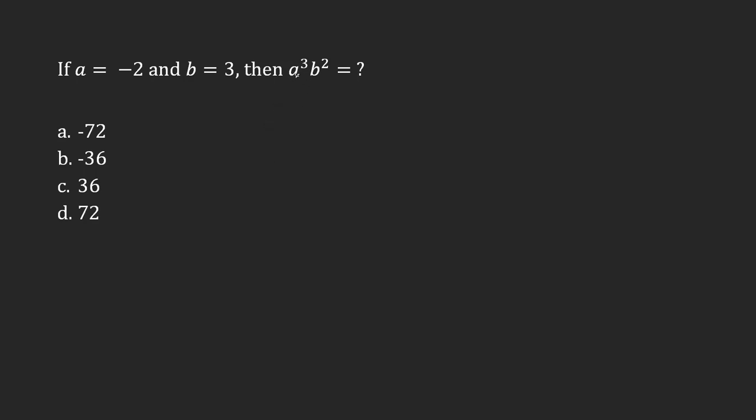Okay, so a to the power of 3 - that means a times a times a. And b to the power of 2, which is what I'm multiplying my a's by, means b times b.